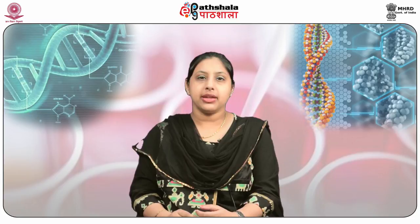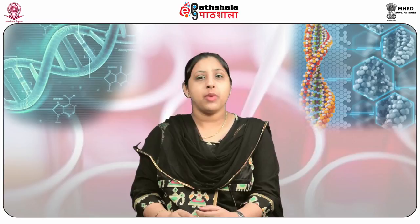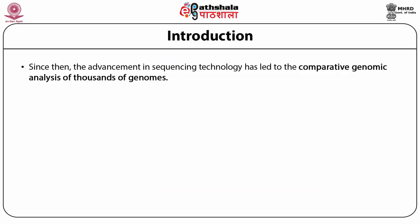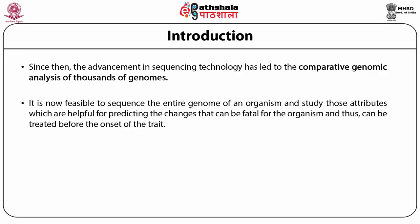Apart from similarity and differences, researchers always emphasize on the novel information possessed by the organism, and it is made possible only when multiple genomes of different organisms are compared. The first comparative genomic analysis was performed way back in 1986 by comparing the genomes of varicella zoster virus and Epstein-Barr virus, which harbors around 100 genes. Since then, the advancement in sequencing technology has led to the comparative genomic analysis of thousands of genomes.